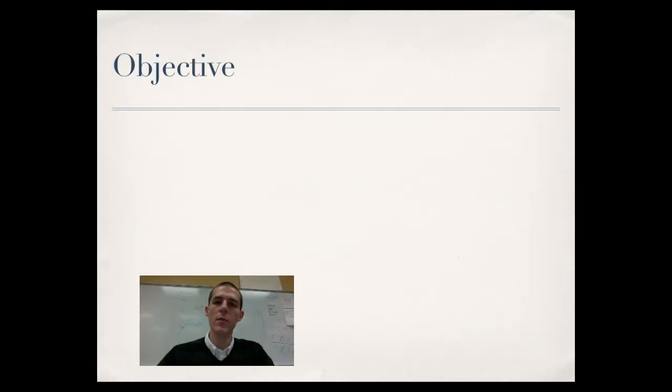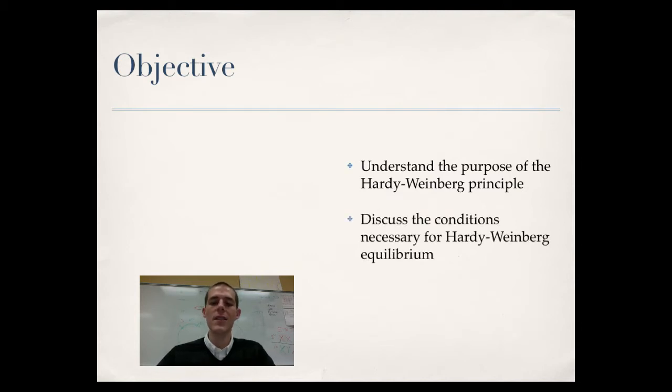As always, let me get to your objectives before we get going. Things to know or to be able to do by the end of this video. First of all, understand the purpose of the Hardy-Weinberg Principle. What is it? What's it about? Discuss the conditions necessary for Hardy-Weinberg Equilibrium. Throughout your biology courses, they will talk about Hardy-Weinberg Equilibrium quite a lot. There are five conditions that need to be met for that to be true. We'll talk about those. Last one is where the rubber hits the road. Apply the Hardy-Weinberg Equation to real world situations.